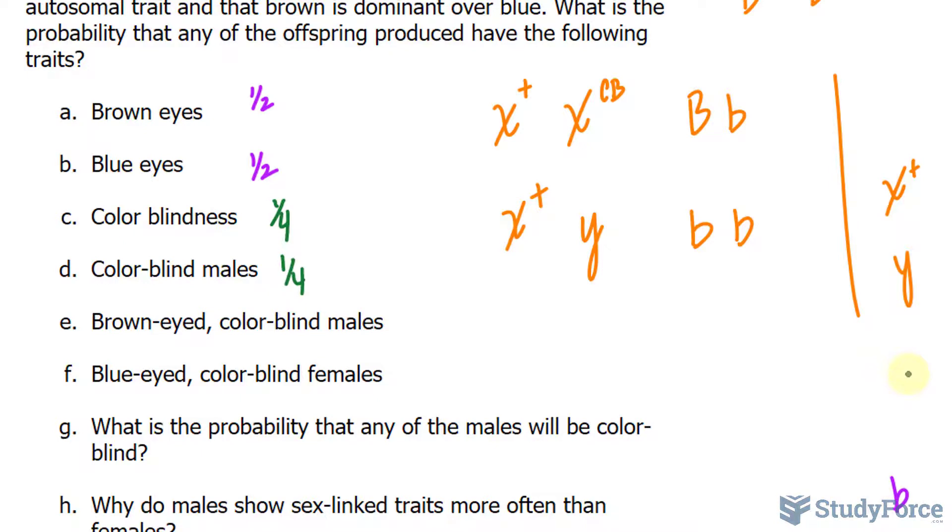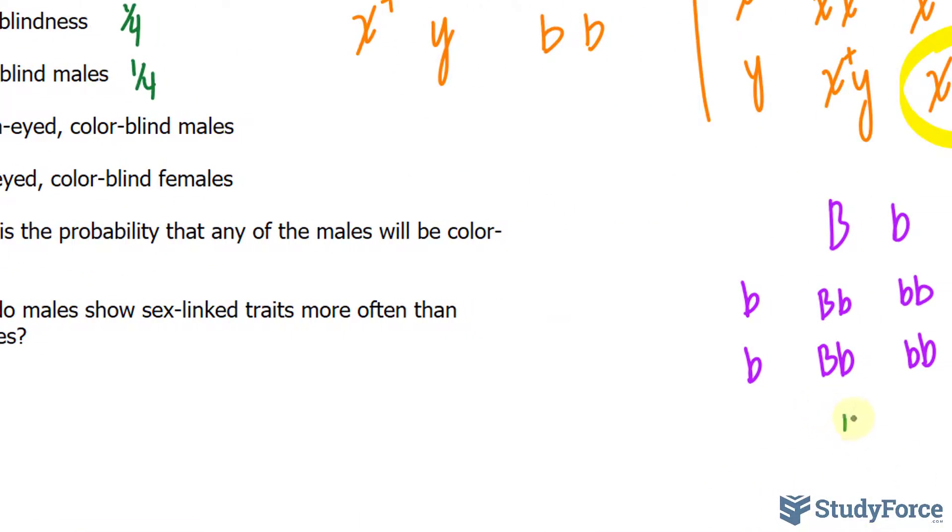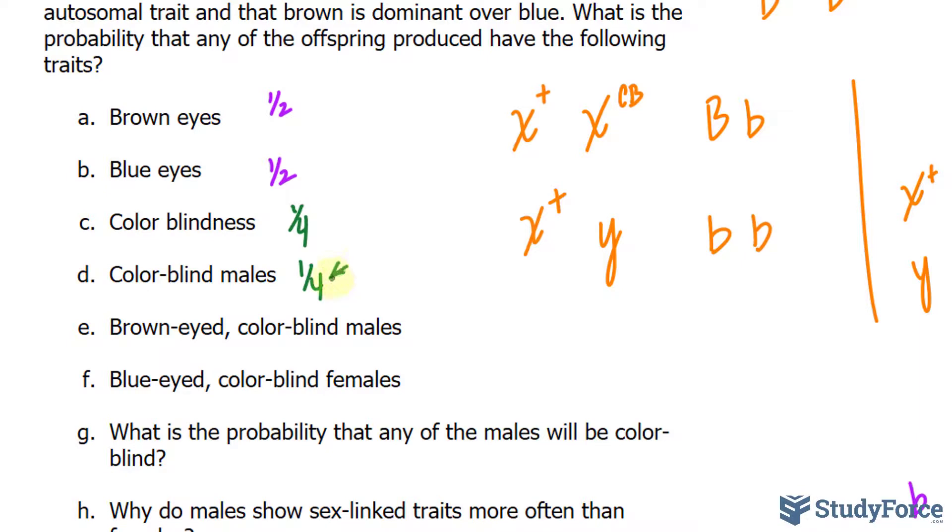Moving on to question E, brown-eyed and colorblind males. Brown-eyed, there is a one in two chance. We've distinguished that. And colorblind males, we'll use that number. We'll take half, multiply that to a quarter, which makes one in eight.